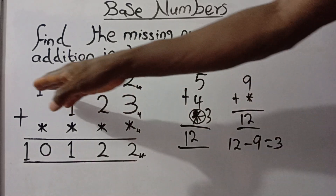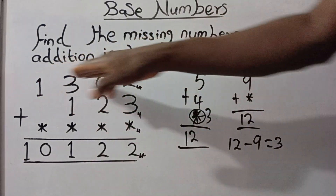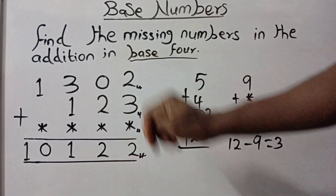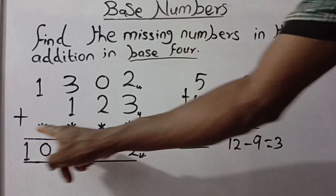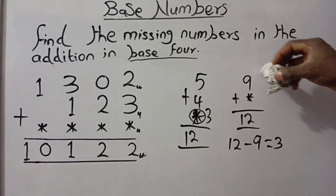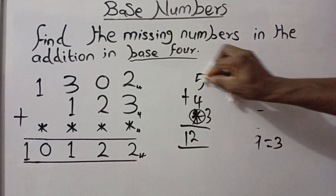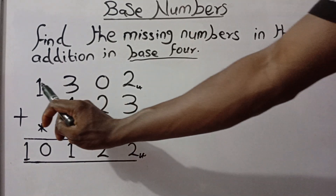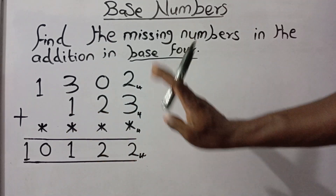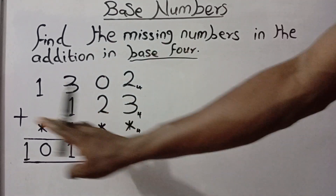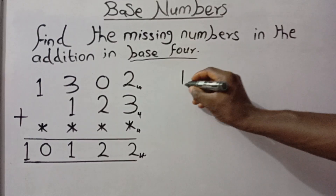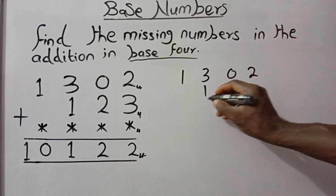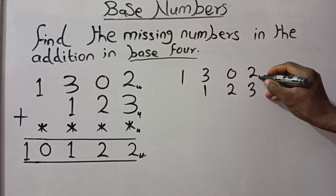That is exactly the same thing we'll be doing here. The first step is to add the ones that are visible — that is 1302 plus 123. Whatever we get there, we subtract it from the overall answer to find the missing number. So we need to first get the addition of 1302 and 123 in base 4, and whatever we get there we subtract from the overall solution. Don't forget the addition will be performed in base 4.